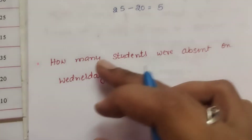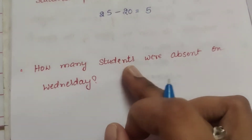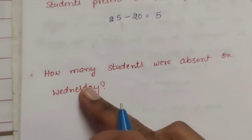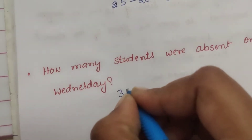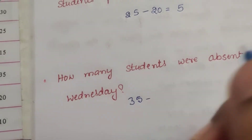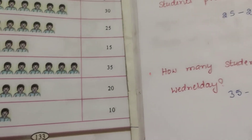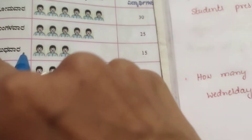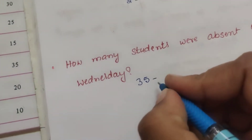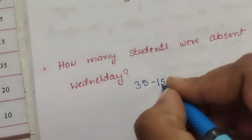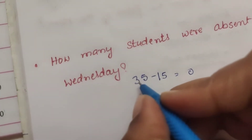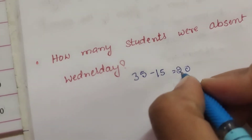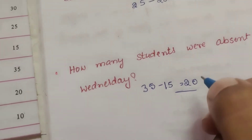Next question: How many students were absent on Wednesday? The total class has 35 students. On Wednesday, 15 students were present. So 35 minus 15 equals 20 students were absent on Wednesday.